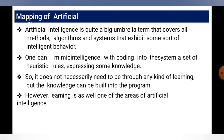AI currently encompasses a huge variety of subfields, ranging from general learning and perception to specifics such as playing chess, proving mathematical theorems, writing poetry, driving a car on a crowded street, and diagnosing disease. It can be applied to any intellectual task, making it a truly universal field. The mapping of AI — artificial intelligence is quite a big umbrella term that covers all methods, algorithms, and systems that exhibit some sort of intelligent behavior. One can mimic intelligence with coding, using a set of rules expressing some knowledge, without necessarily requiring any kind of learning.